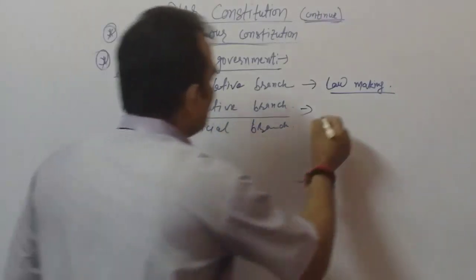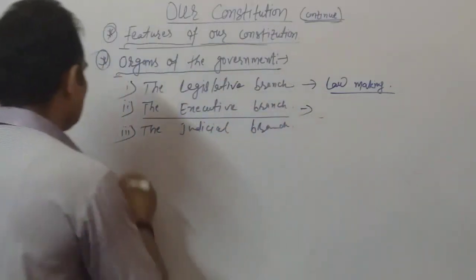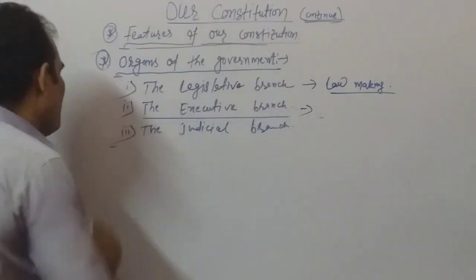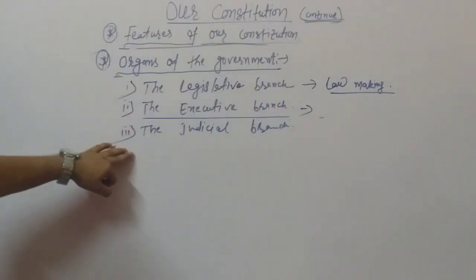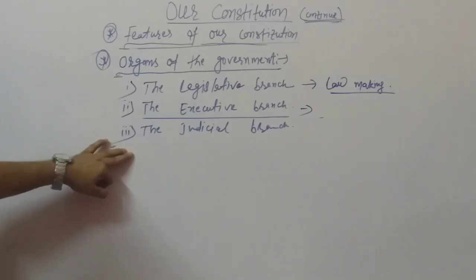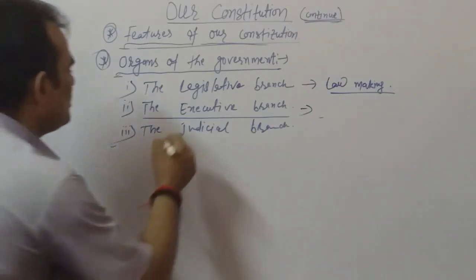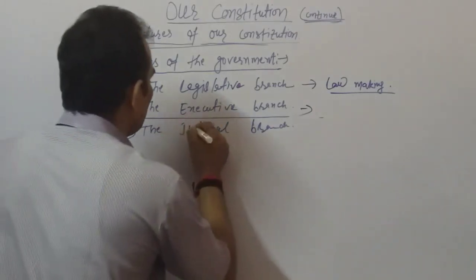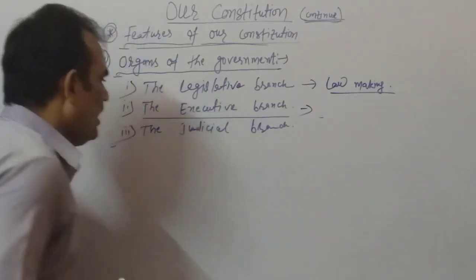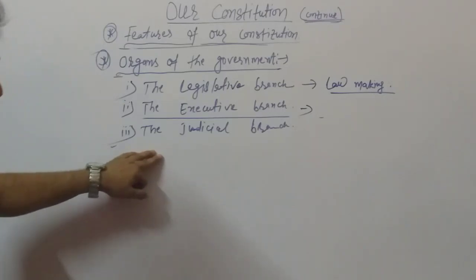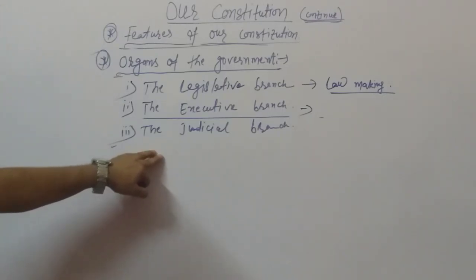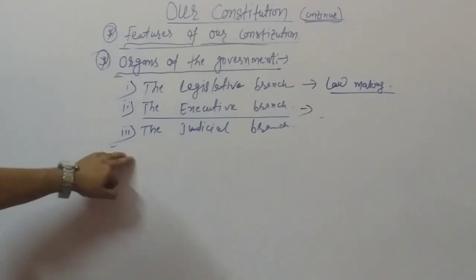The third point is the judicial branch, which means the branch that administers justice through the courts.